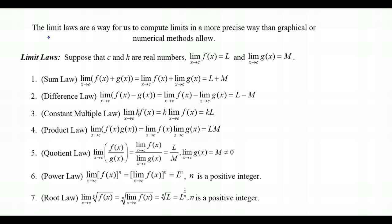So far in our study of limits we've used primarily a graphical and numerical approach to solving limits. But now we're going to take a look at the limit laws, which are a way to compute limits in a more precise way. We'll suppose that C and K are real numbers, and that the limit as x approaches C of f(x) equals L, and the limit as x approaches C of g(x) equals M — two limits that exist as we approach C on two different functions.